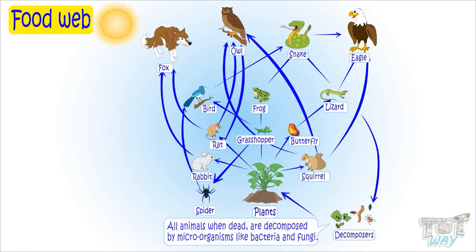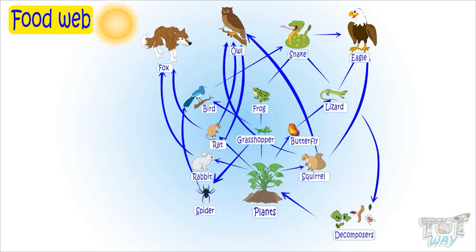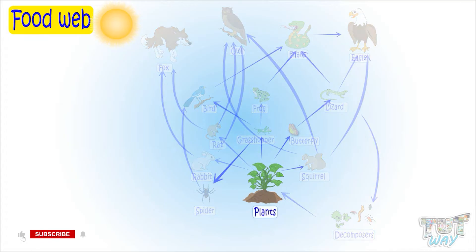Now let's see the various food chains in this food web. Plants are eaten by butterflies, butterflies by lizard, and lizard by eagle. Plants are eaten by grasshopper, and the grasshopper by frog, and frog by snake.